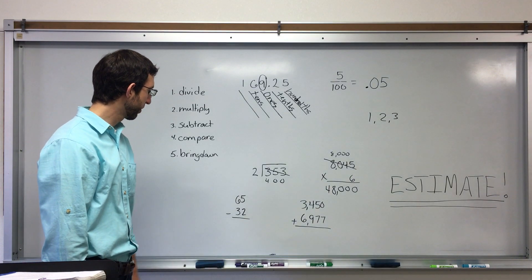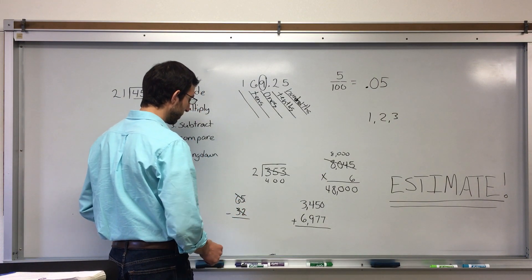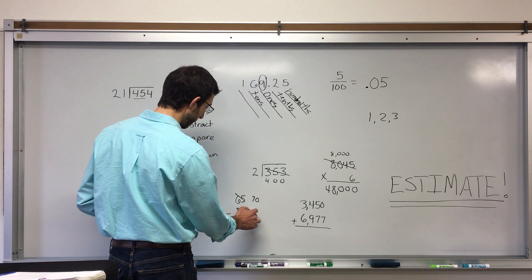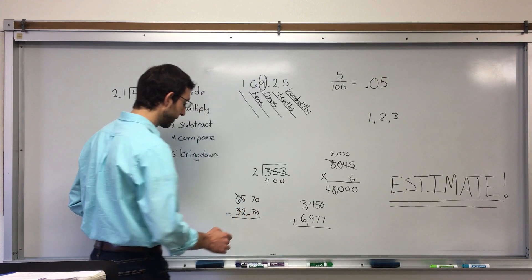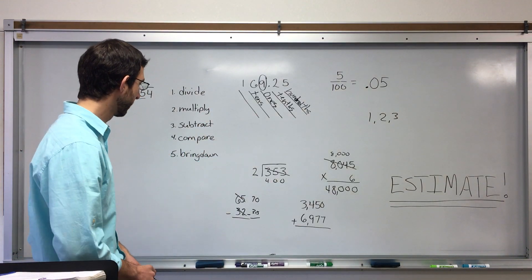And as a subtraction problem, you end up rounding both. You end up rounding both figures to the largest place value. So, 70 and 30. And then subtracting. And you can get the answer just like that. 40.